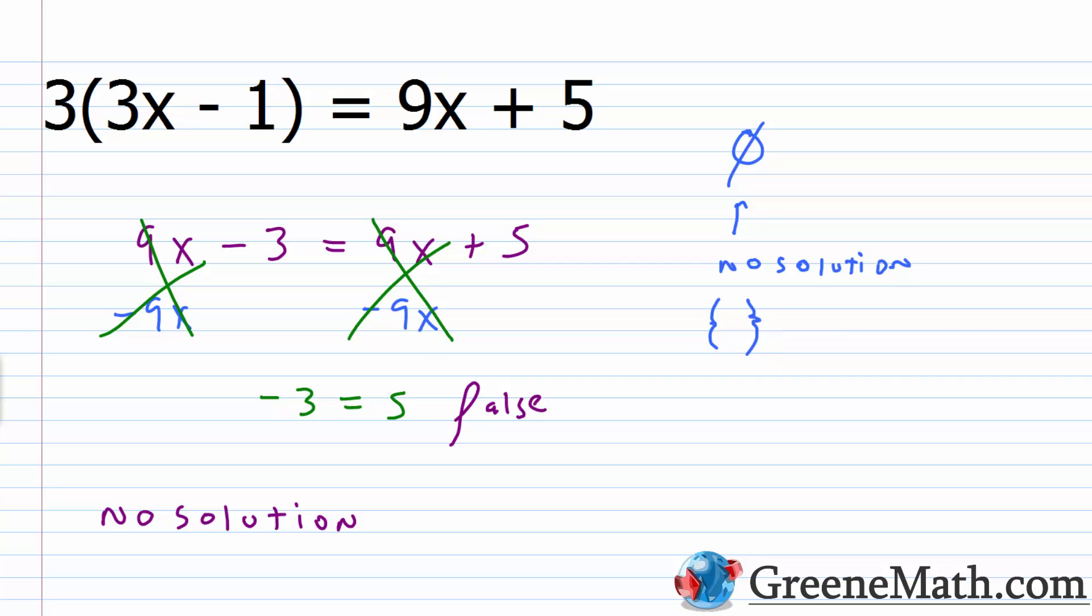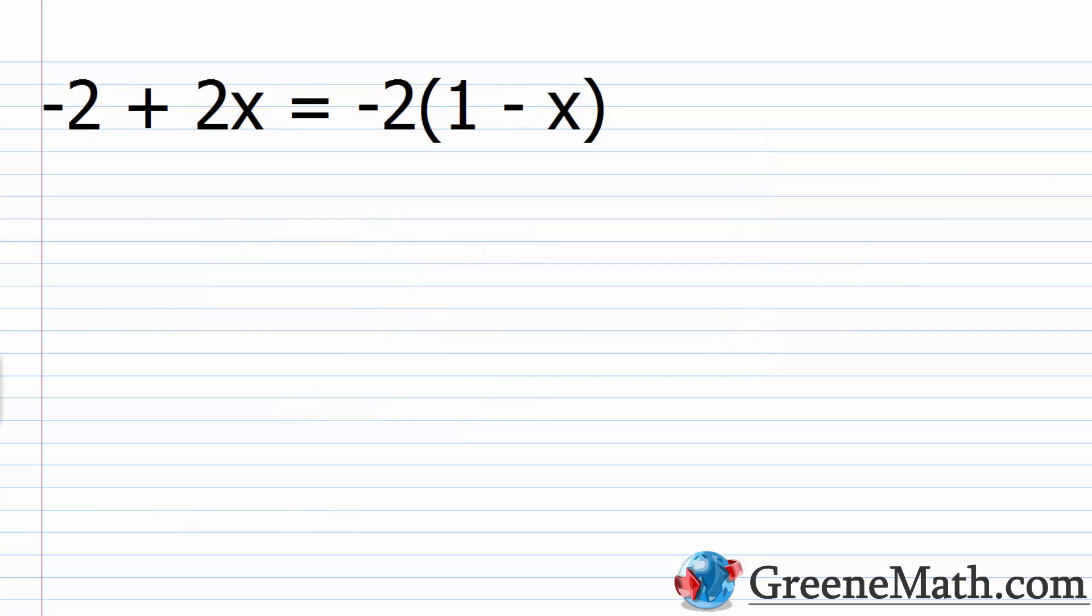All right, let's take a look at something else. So we also have an equation that's known as an identity. So -2 + 2x = -2(1 - x). All right, so what do we do here? So we have -2 + 2x is equal to -2 times 1 is -2, and then -2 times -x is +2x.